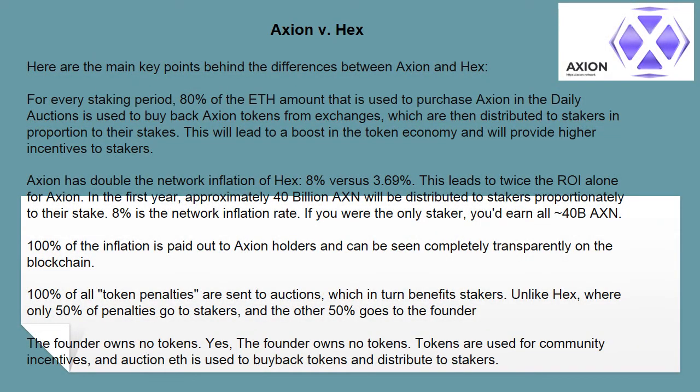Here are the main key differences between Axion and HEX. For every staking period, 80% of the ETH used to purchase Axion in the daily auctions is used to buy back Axion tokens from exchanges, which are then distributed to stakers in proportion to their stakes. This leads to a boost in the token economy and provides higher incentives to stakers.